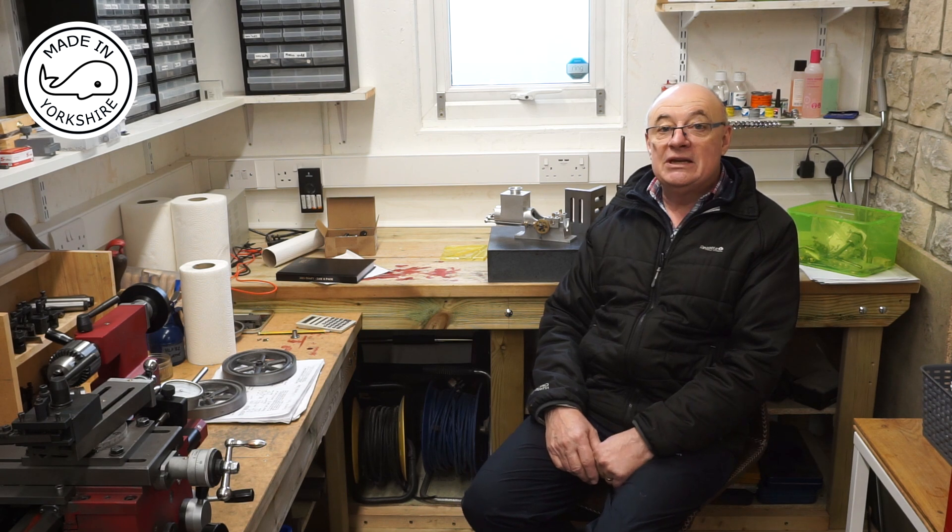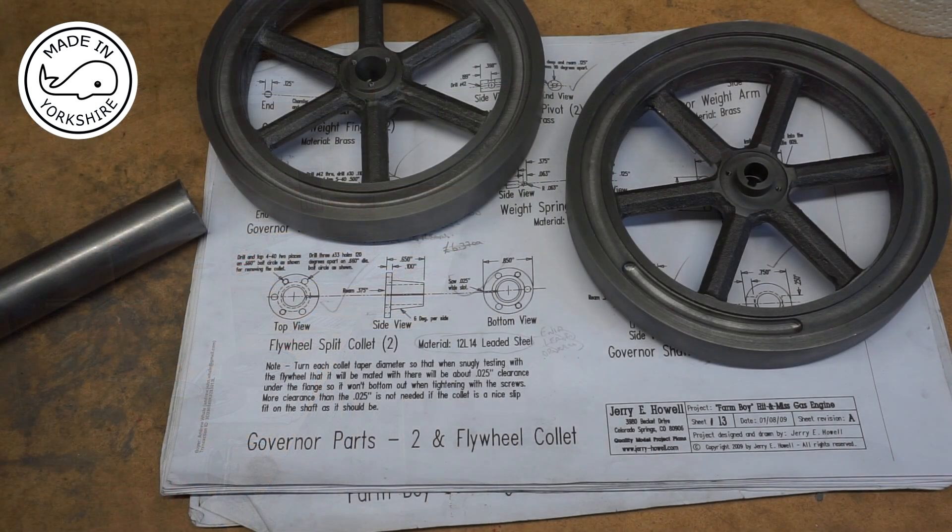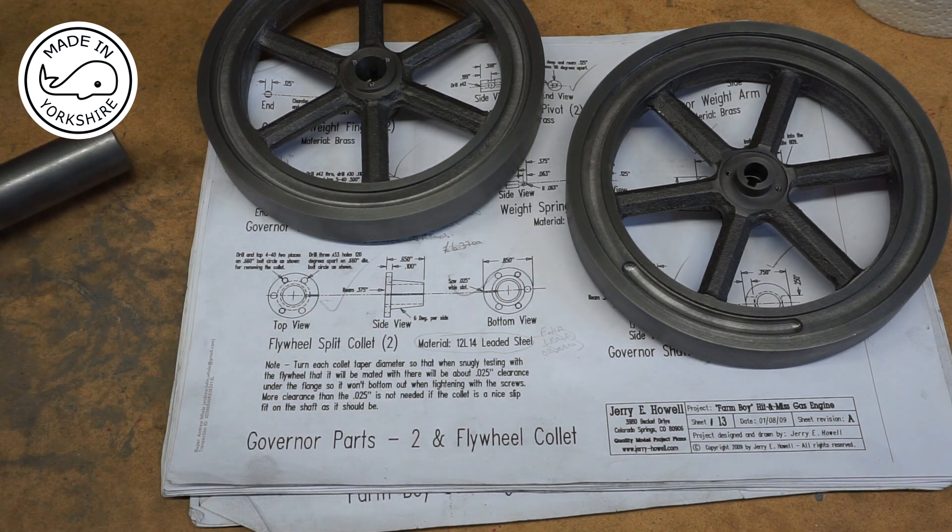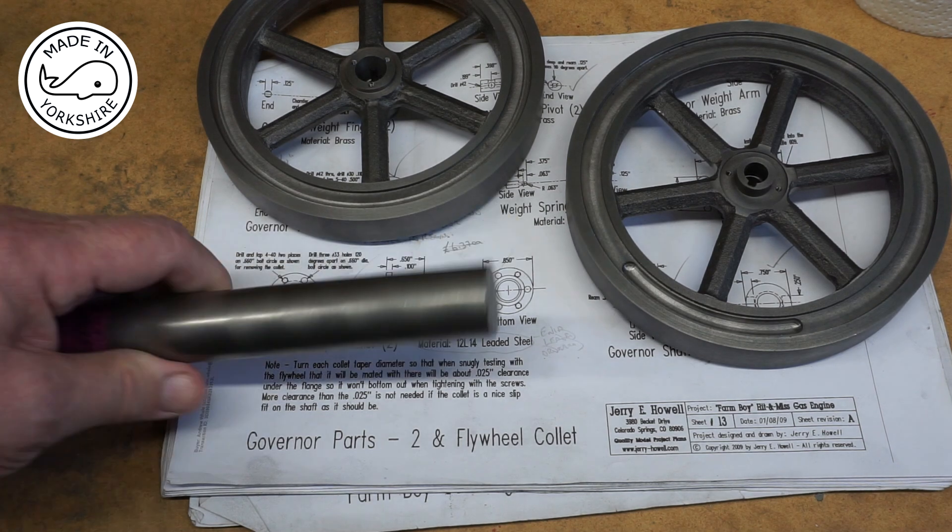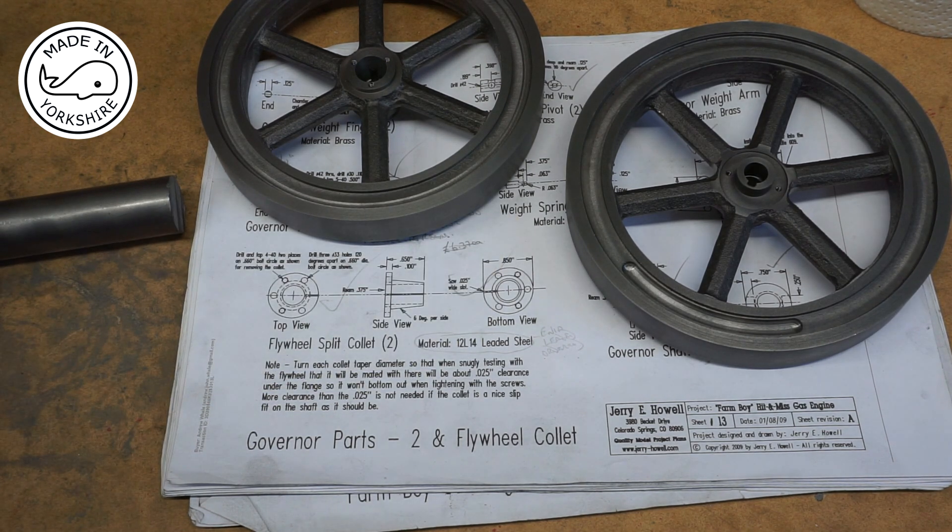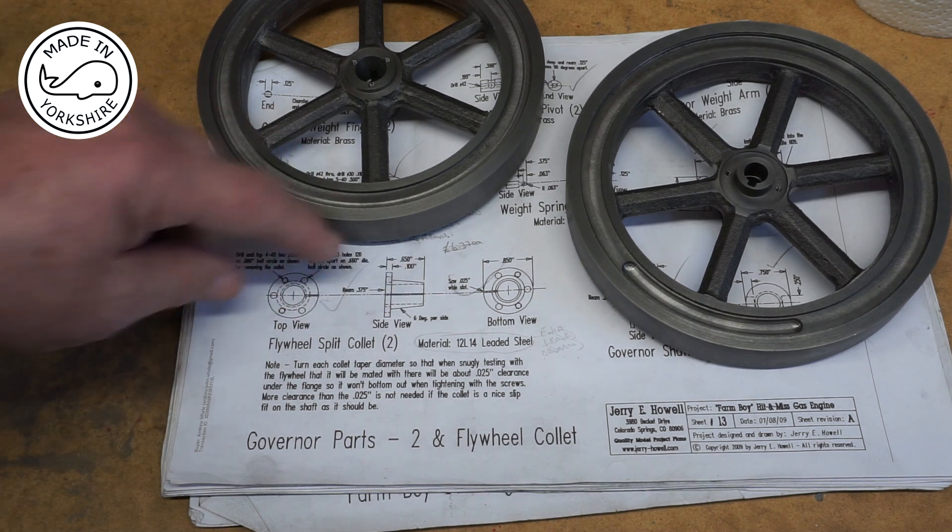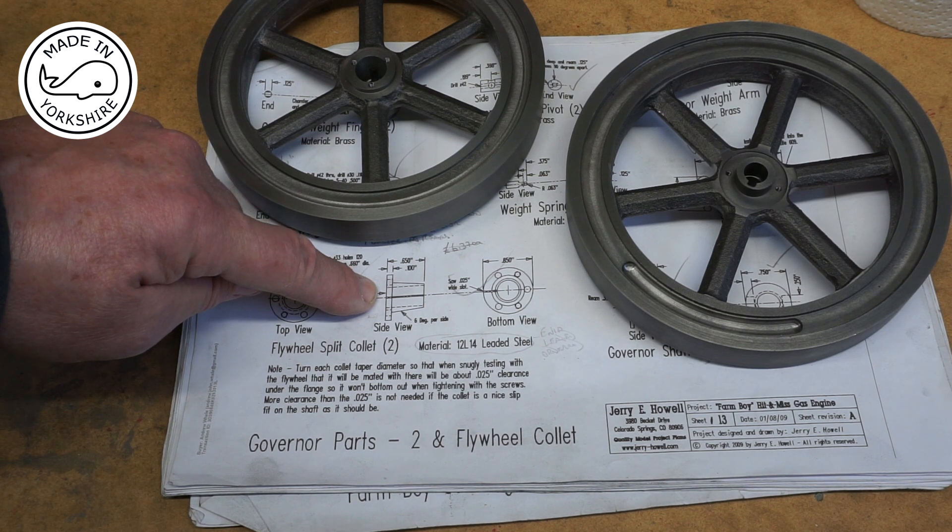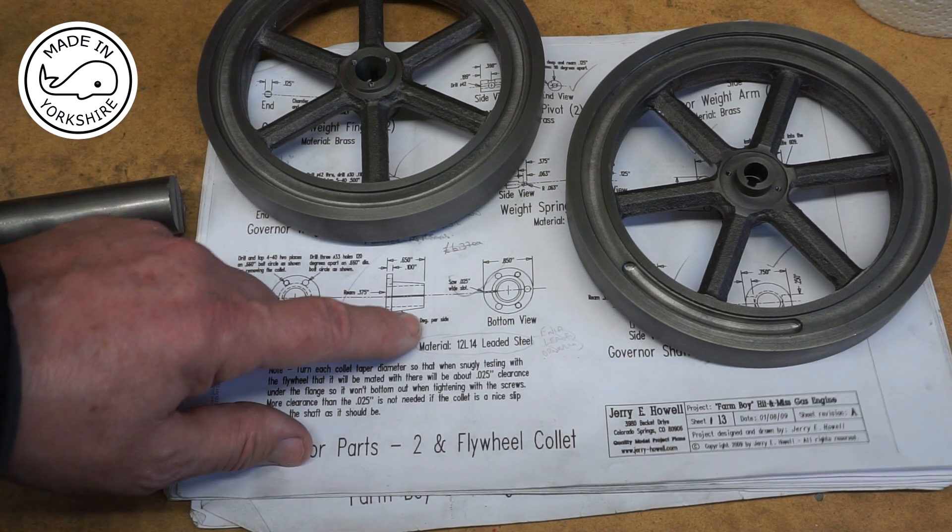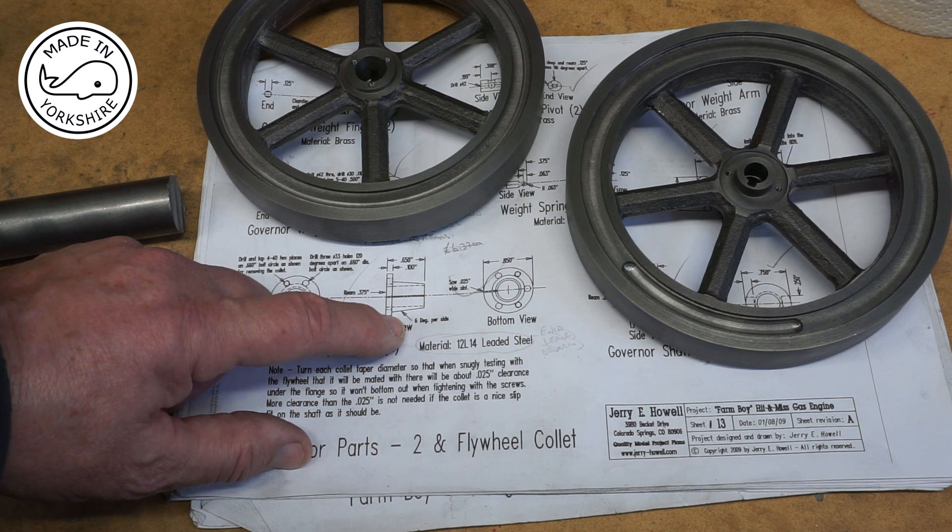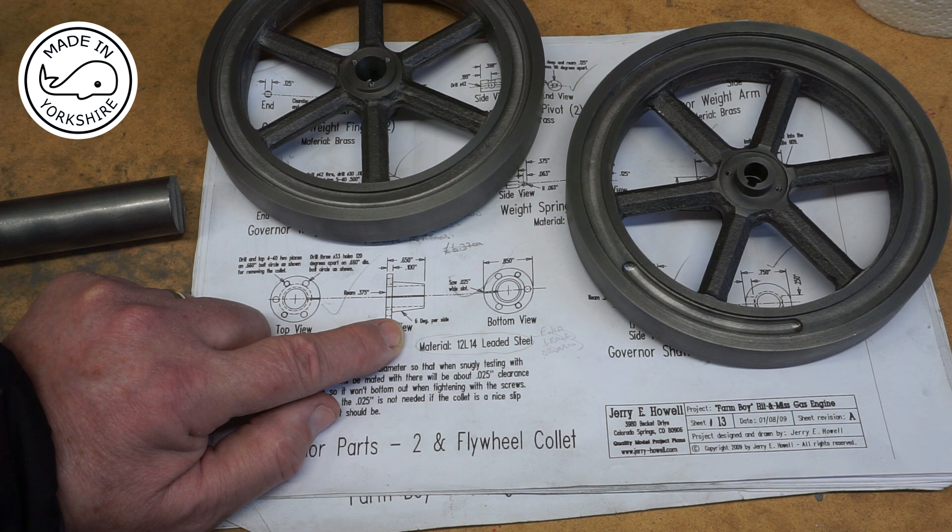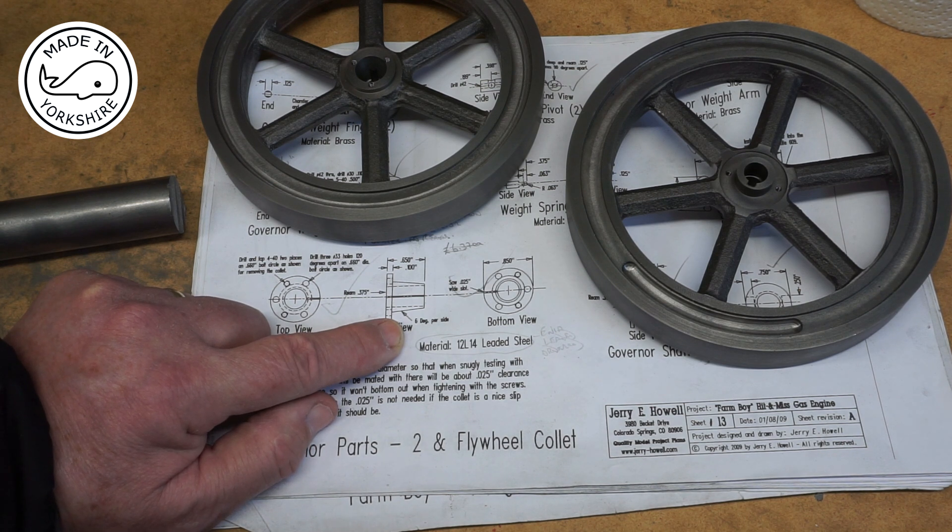The split collets are made out of a piece of leaded steel which machines really nicely. So my plan is to put this in a collet chuck on the lathe and I'll face the end off, then I'll drill and ream to 3/8 of an inch. And then I'll cut this 6 degree angle. Now I did sort of think ahead a little bit when I was machining the flywheels and I actually left the compound slide set at 6 degrees, so when I machine these hopefully they'll be a perfect fit to fit inside the flywheel.